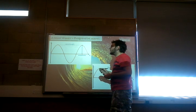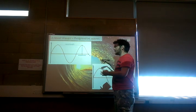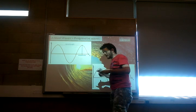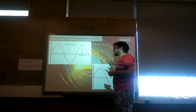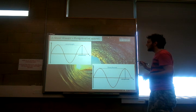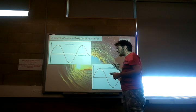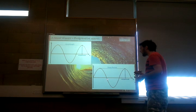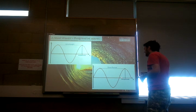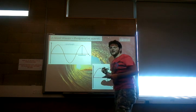Frequency is the number of complete waves that pass a point per second. To summarise the key terms: wavelength is one complete wave from one point to the same point in the next; amplitude is from the peak or trough to the zero disturbance line; time period is how long one wave takes relative to a second; and frequency is how many waves pass per second.